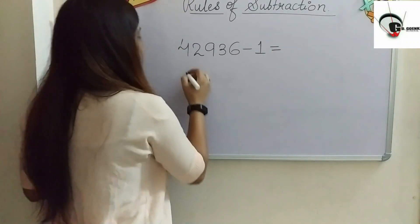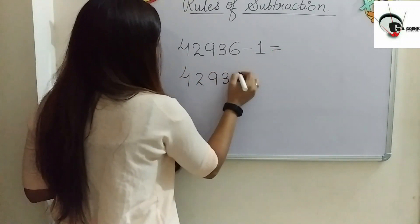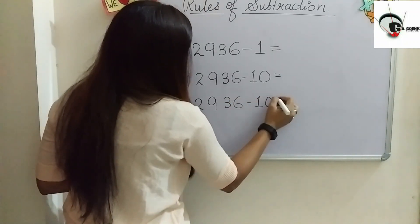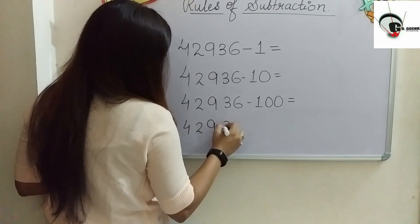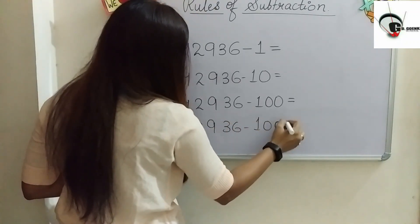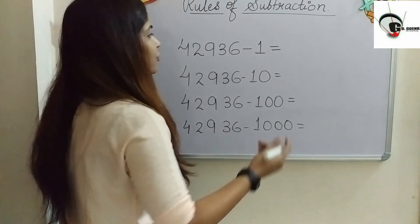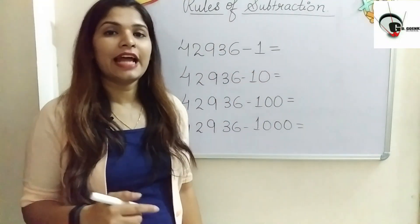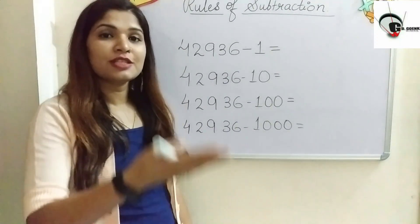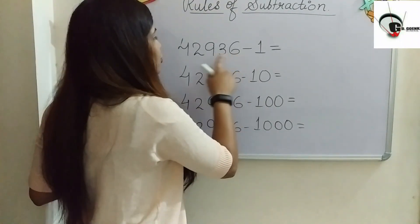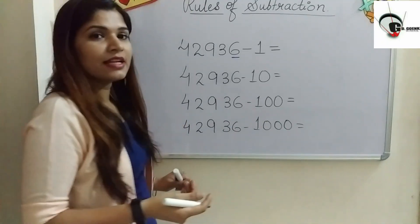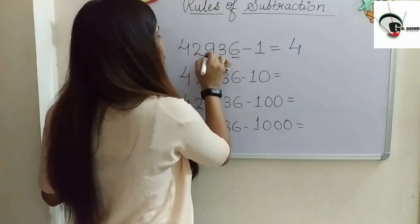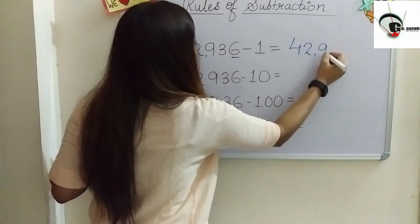We have the number 42,936 and we are going to subtract 1 from it. When subtracting 1, we get the predecessor — the number just before the given number, which is 1 less. The digit at the ones place is 6, and the number just before 6 is 5. So 42,936 minus 1 equals 42,935.